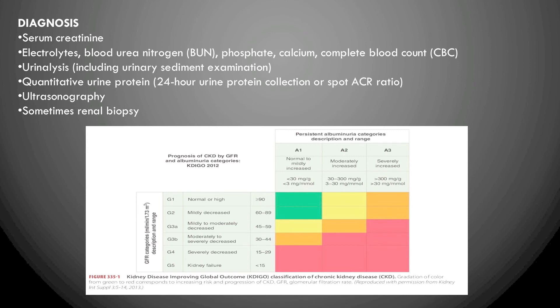Dyspnea may develop due to pleural effusions or ascites. Hypertension is present in approximately 80% of CKD patients. Nails may show brown pigmented lines. Uremic fetor — a urea-like smell — may be present, and uremic frost, snow-like flakes on the skin due to elevated urea, can occur. Vitamin D deficiency and osteomalacia result from impaired renal regulation of vitamin D. Advanced CKD may also cause pericarditis and gastrointestinal ulceration and bleeding.